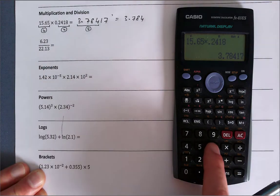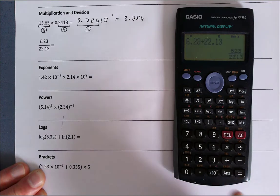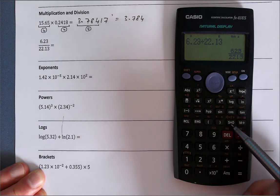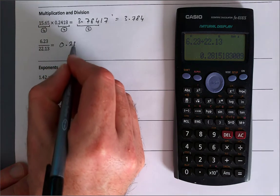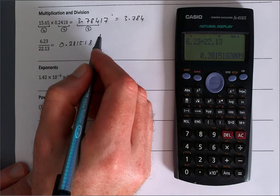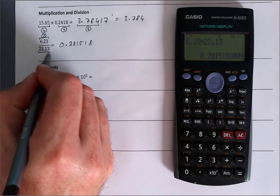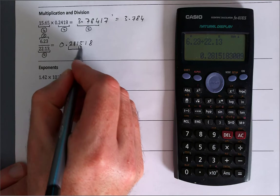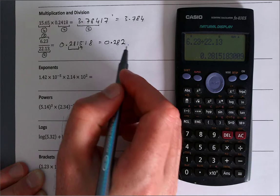Let's try division: 6.23 divided by 22.13. Now here it's giving me the number as a fraction, a little bit annoying, but this SD button here on the calculator will change that fraction into a decimal place. Again, we've got 0.281518, lots of numbers, but I have three significant figures here upstairs and four significant figures downstairs, so my answer is going to be limited to three significant figures. This is a 5 here, so I'm going to round up. That's 0.282 to three significant figures.